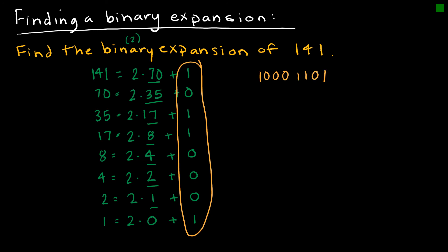Keep in mind, when we write things in binary, typically we write them in groups of 4. So I would write 1, 0, 0, 0, 1, 1, 0, 1, base 2 would be my final answer.